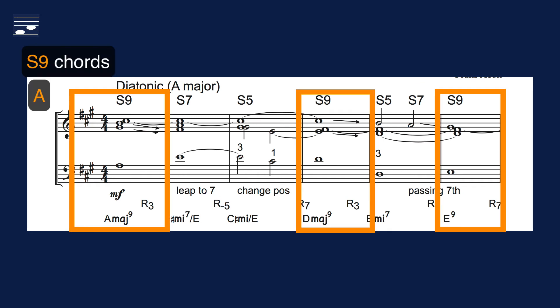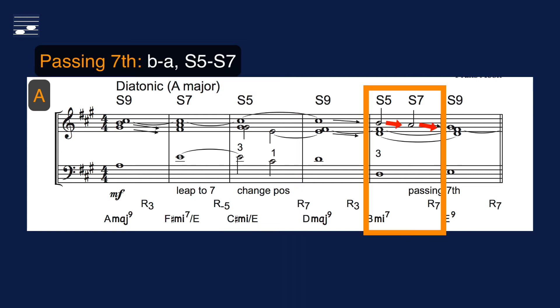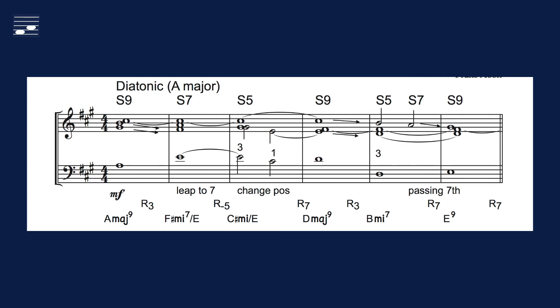The opening A section has three S9 chords. Preparation is by suspended notes, and there is descending stepwise resolution. In measure 3, the C sharp minor triad changes from first inversion into root position. Measure 7 has a passing 7th in the lead part. And in measure 1 there is an ascending bass leap into the 7th of the third inversion F sharp minor 7 chord.